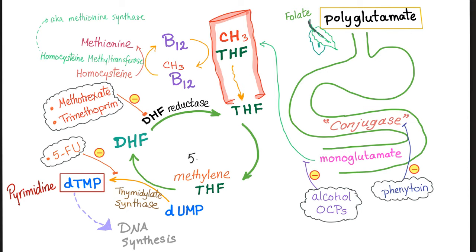The more sophisticated term is 5,10-methylene THF, or 5,10-dimethyl THF. Then methylene THF becomes dihydrofolate. The famous enzyme dihydrofolate reductase — inhibited by methotrexate or trimethoprim — converts DHF back to THF. While THF was being converted into DHF, DUMP was being converted into DTMP by the enzyme thymidylate synthase. DUMP into DTMP equals pyrimidine synthesis.